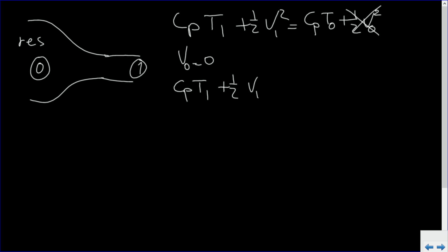Suppose we have a reservoir here at station 0, and we have station 1 here. Let's look at the energy equation for this flow. So it follows CP T1 plus half V1 squared is CP T0 plus half V0 squared. Now in the reservoir the velocity is zero, which leaves us with CP T1 plus half V1 squared is CP T0 or if we write it differently, T0 divided by T1 is 1 plus V1 squared divided by 2 CP T1.